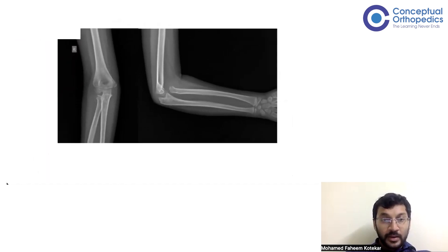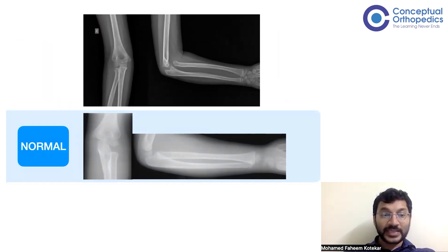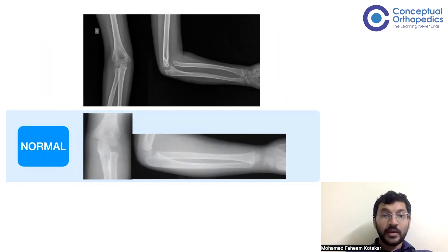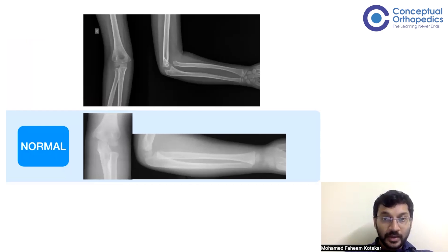Comparing a normal with an abnormal X-ray: on the normal X-ray, the radiocapitellar line bisects the capitellum. On the abnormal lateral view, the bow of the ulna is reversed — this abnormal bowing of the ulna represents a plastic deformation of the ulna along with an anterior dislocation of the radial head.